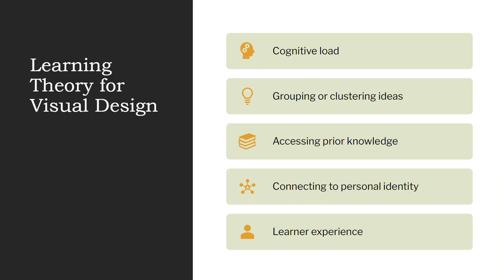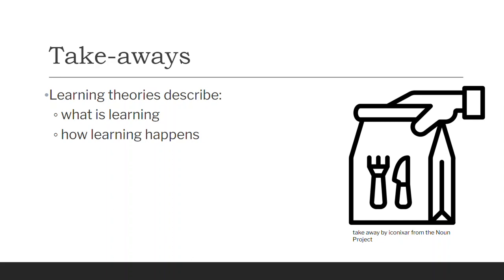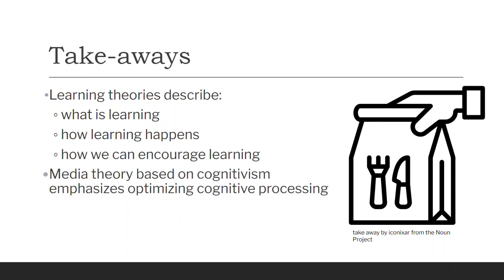So it's just using these principles wisely. Takeaways for this video: learning theories describe what is learning, how learning happens, and how we can encourage learning. Media theory based on cognitivism emphasizes optimizing those cognitive processes, those memory and understanding encoding processes. And other perspectives on learning might call for other considerations. Thanks for watching!